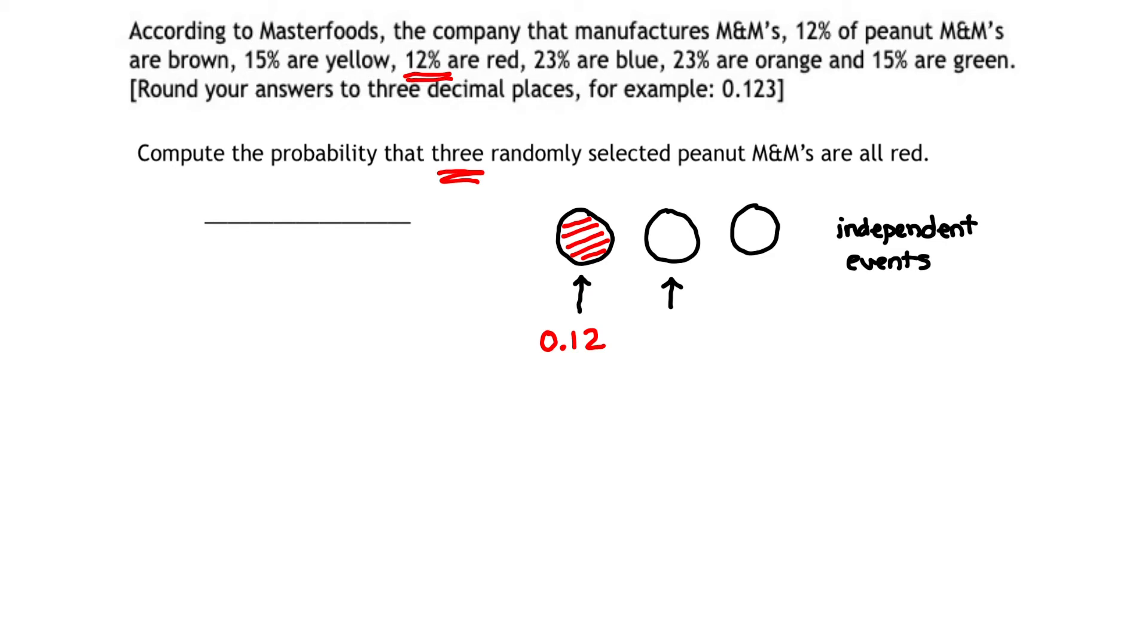When I reach and get that second M&M, what is the probability again that it's red? Because we're looking for all of them being red. Well, again, 12% chance of getting a red M&M, so the probability that the second M&M is red is also 0.12.